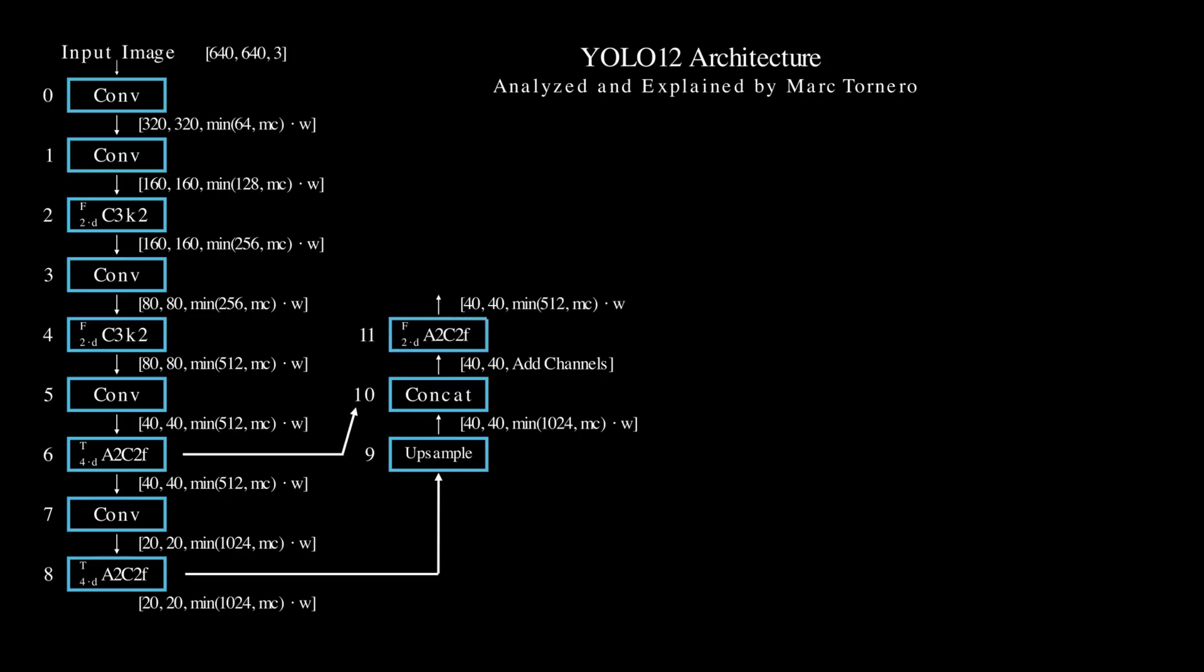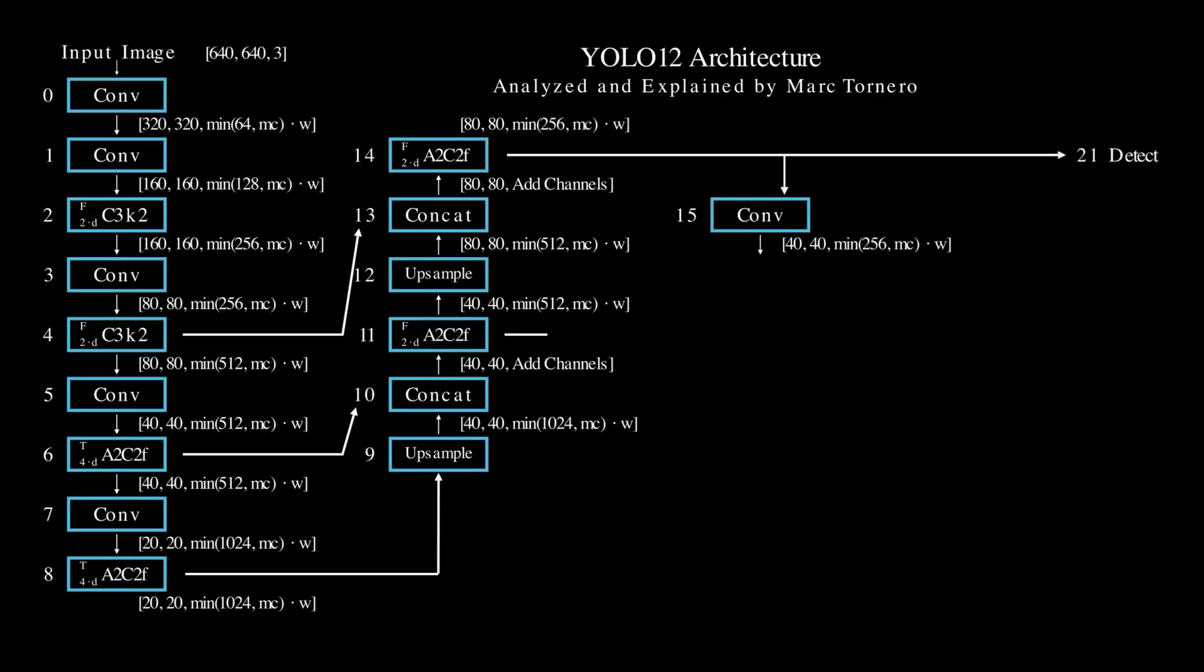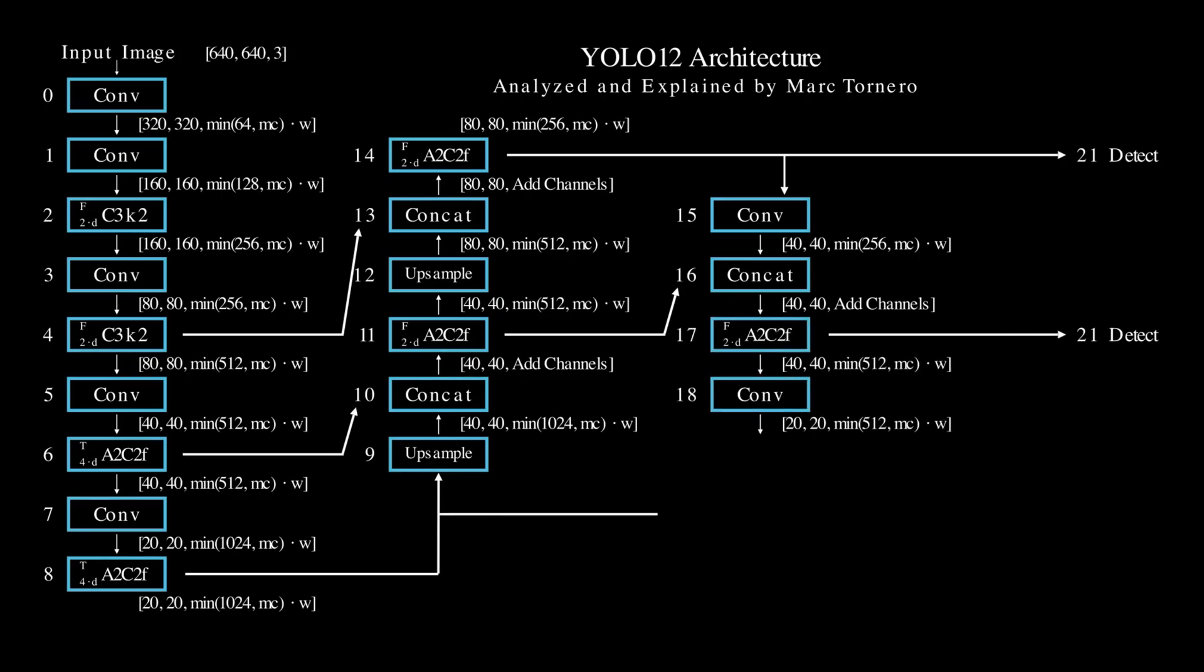The A2C2F blocks in the NEC, such as this one, act differently from previous ones in the backbone, and they do not use the area attention mechanism, as we'll see shortly. They act very much like C3K2 modules. These blocks merge features to further enhance detection accuracy. One last true C3K2 module completes the NEC of the architecture.